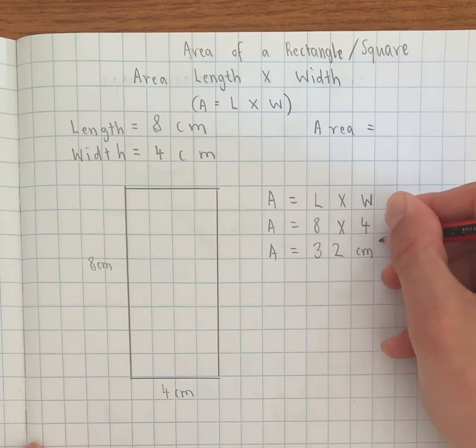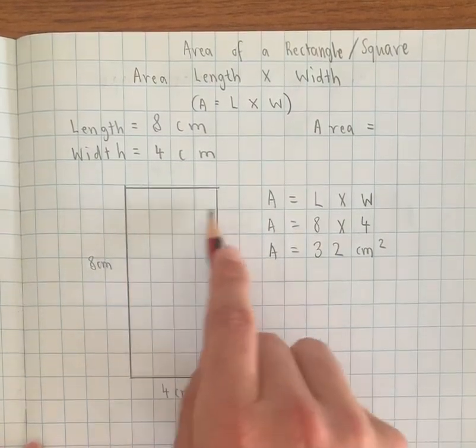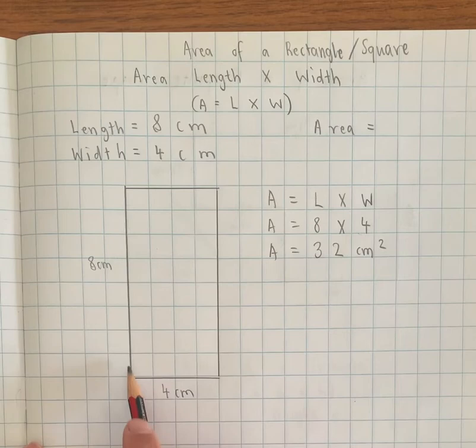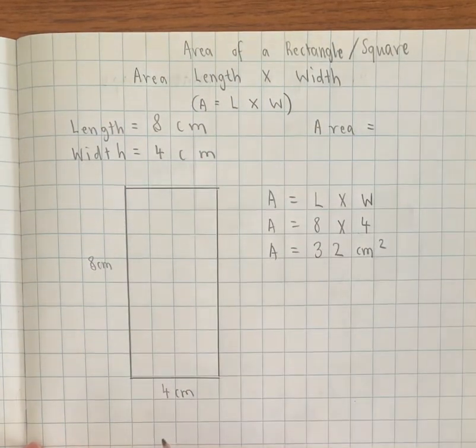Why is it centimeters squared? It's because there will be 32 centimeter squares—that's one of them—in my rectangle, and I can prove that.